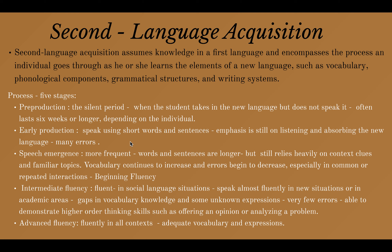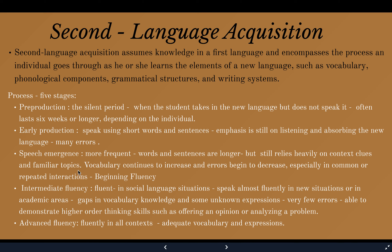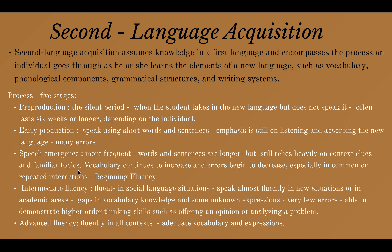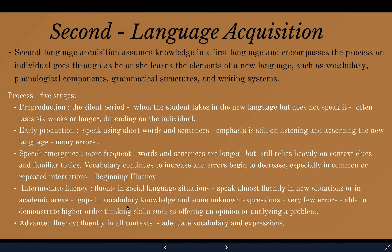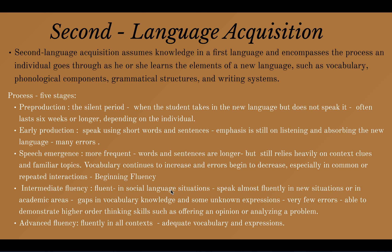The third stage, Speech Emergence, is when learners start to use longer words and sentences, and there is a decrease in errors. They develop more common language and fluency. Then, Intermediate Fluency means they can speak in a social setting. There are still a few errors, but they may be able to demonstrate higher-order thinking skills such as offering an opinion or analyzing a problem.